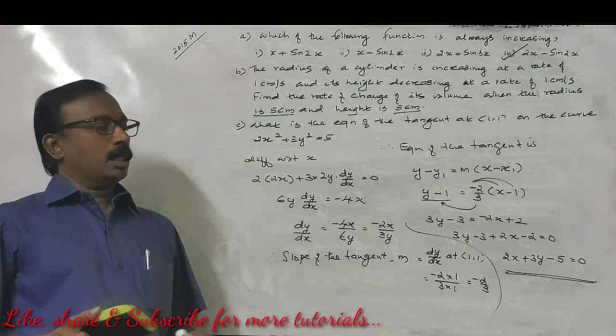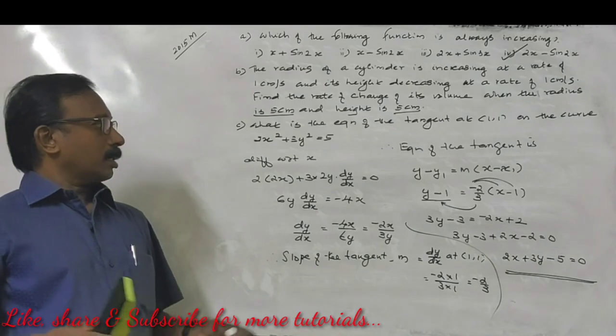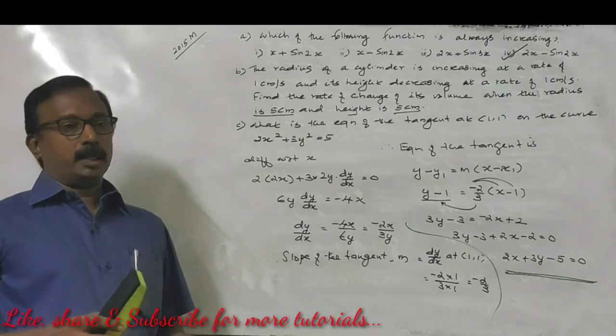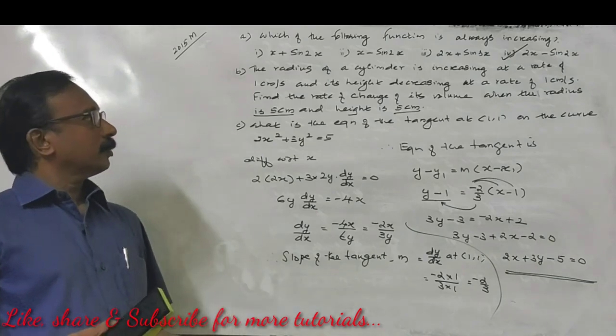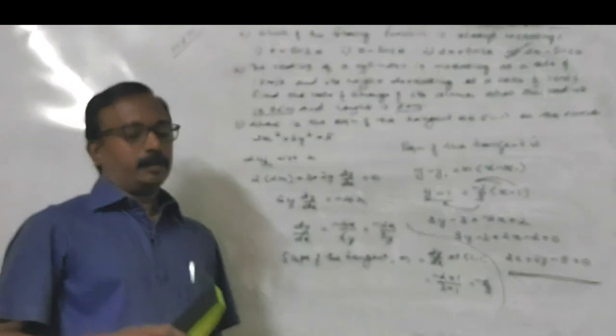This is the equation of the tangent to the curve 2x² plus 3y² equals 1 at (1, 1), which is 2x plus 3y equals 5. You can understand all the problems I have done here. Bye.